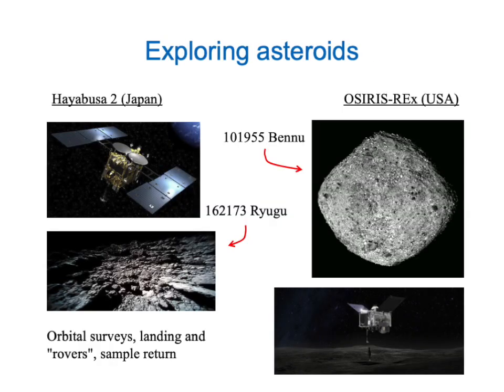And since we're talking about exploring minor bodies in the solar system, I should mention a couple of remarkable asteroid explorers. One of them is the Hayabusa 2 spacecraft launched by Japan, which has thoroughly surveyed the asteroid Ryugu. And then there's another one from the United States, OSIRIS-REx, which is at the moment orbiting asteroid Bennu, and will very soon grab a sample of the surface and begin to bring it back to Earth for study.